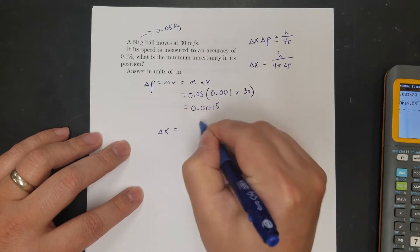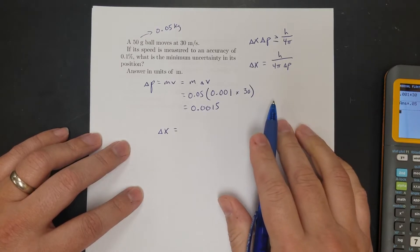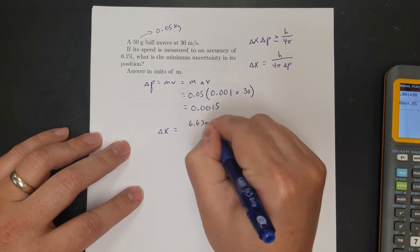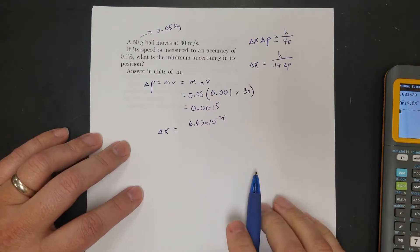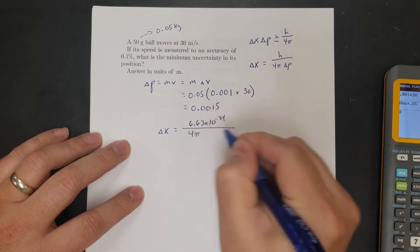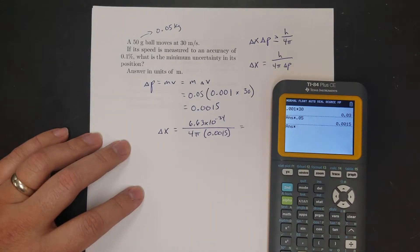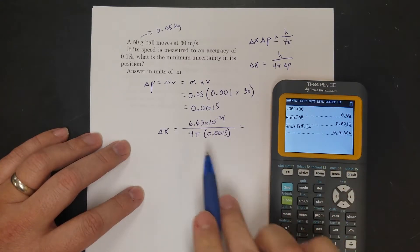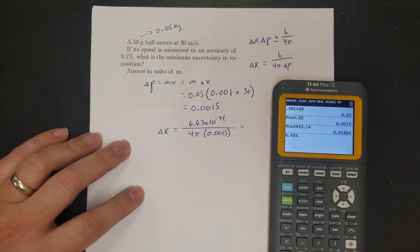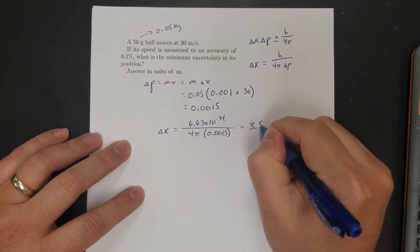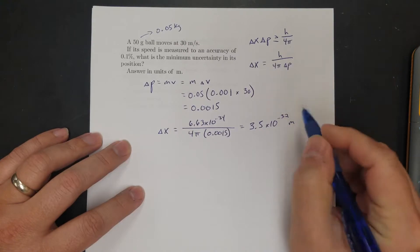So delta x equals h over 4π times delta P. Using h = 6.63×10⁻³⁴ (Planck's constant in base units), divided by 4π times 0.0015, that gives a result of 3.5×10⁻³² meters.